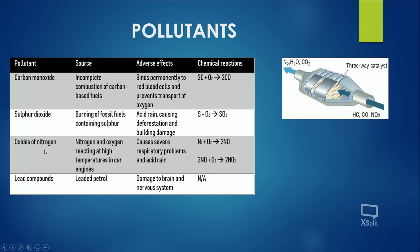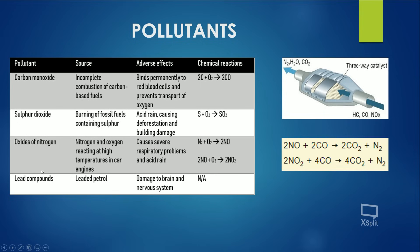One way to counteract the production of oxides of nitrogen inside car engines is to install a catalytic converter. It catalyzes the reaction between nitrogen oxide and carbon monoxide, producing carbon dioxide and nitrogen. It can also catalyze the reaction between nitrogen dioxide and carbon monoxide, again forming carbon dioxide and nitrogen. This is smart because it removes two pollutants — nitrogen oxide and carbon monoxide — simultaneously to produce relatively non-harmful products.